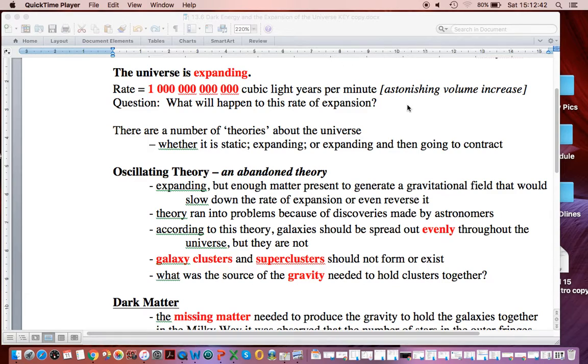We have the oscillating theory, and you can see it says it's an abandoned theory. And this is the idea that the universe was expanding, but the rate of expansion was going to slow down and potentially even reverse. The problem with this theory was it said that we could not have clusters of galaxies, or even superclusters. In other words, it was saying that all the galaxies should be evenly spread out, and they're not. So that toasted that theory.